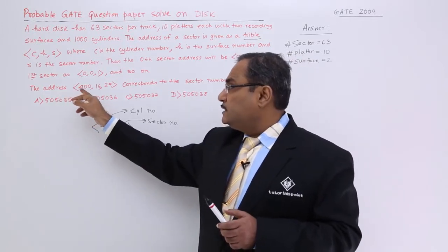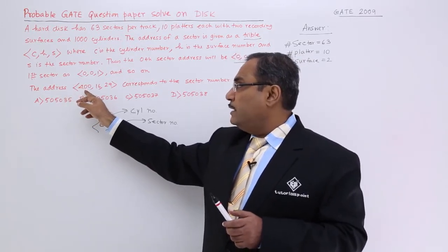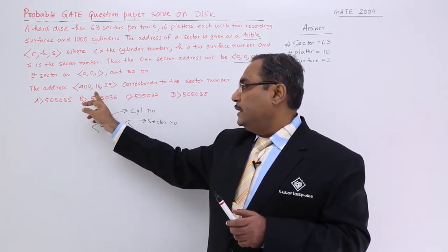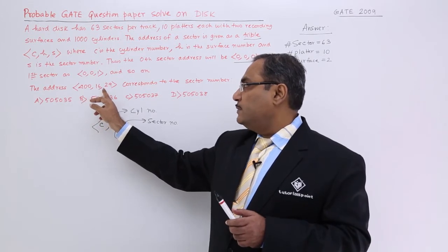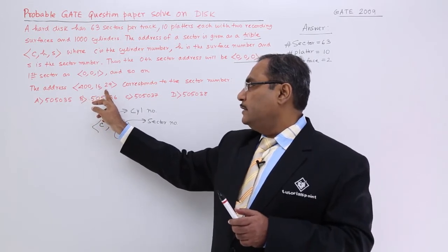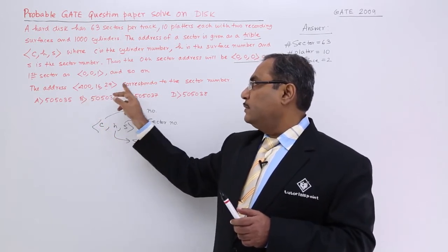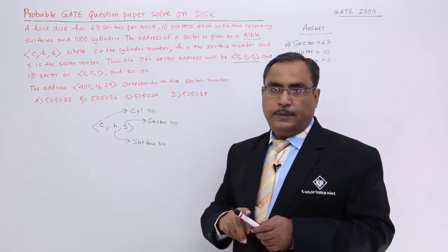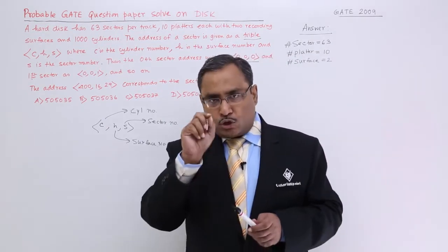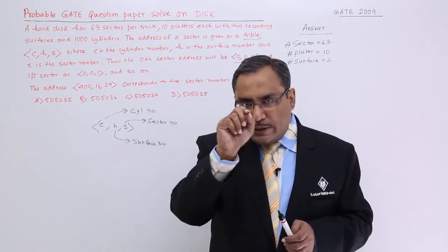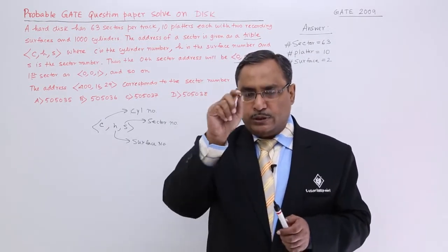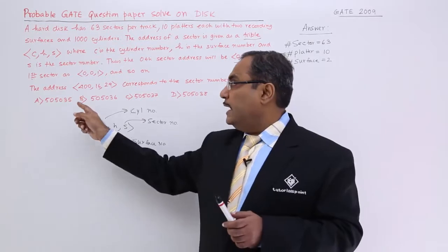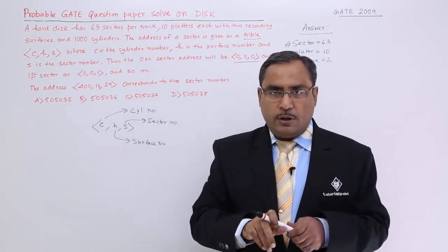The address (4,0,0) has cylinder number 16, surface number 29, and we need to find which sector number or block it corresponds to. The answers are given and you should find it out.